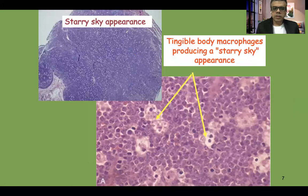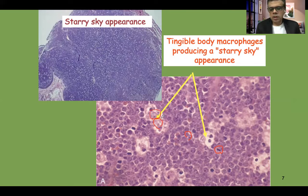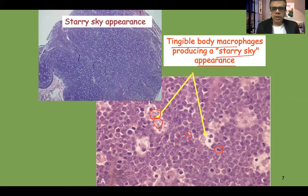On histology, you can see the uniform-appearing monomorphic neoplastic cells with a very high mitotic index. Amidst these sheets of neoplastic lymphocytes, there are certain large macrophages — tingible body macrophages — containing apoptotic cells and nuclear debris. The dark-looking neoplastic cells and lighter-looking macrophages together impart the classic starry sky appearance of Burkitt lymphoma.